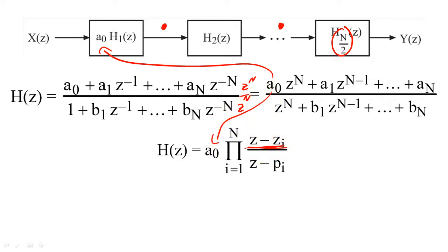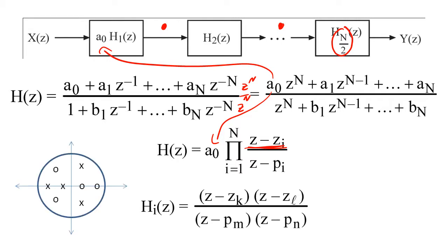Once we have the poles and zeros in this form, we want to pair the poles and zeros for every sub filter in such a way that all filter coefficients will be real. So, if any poles and zeros are complex, they must be paired with their complex conjugate.